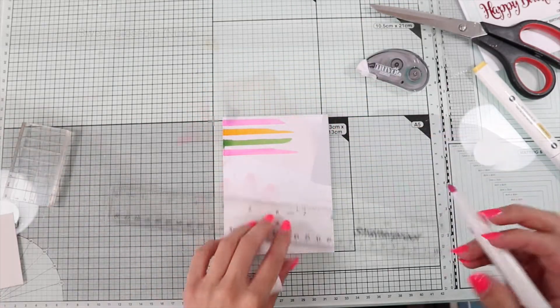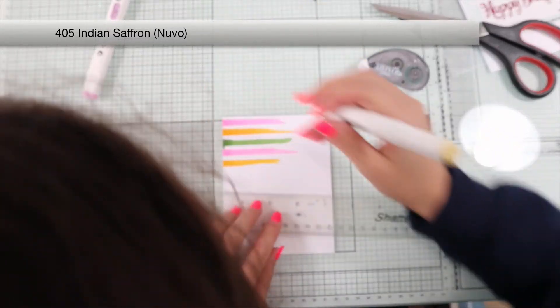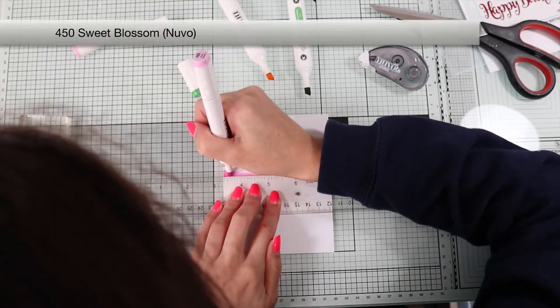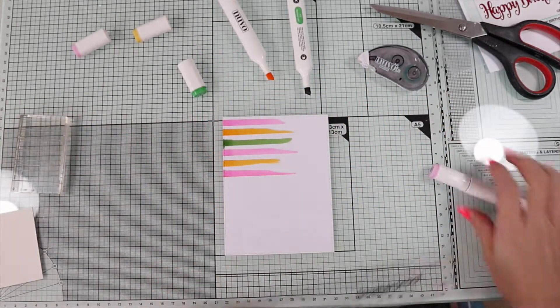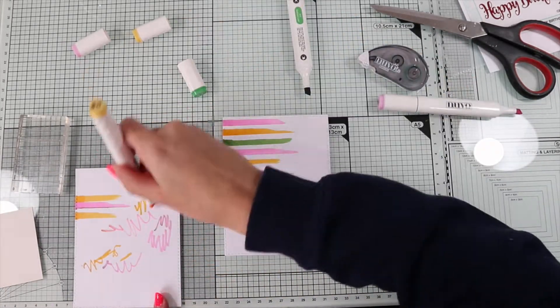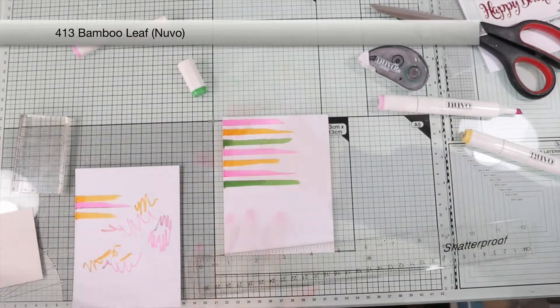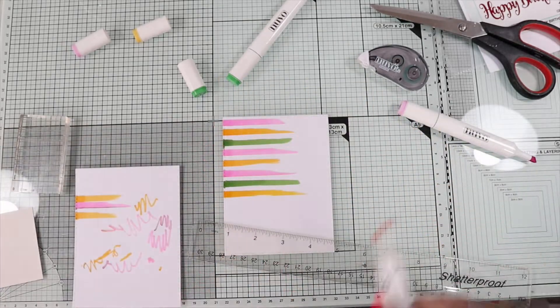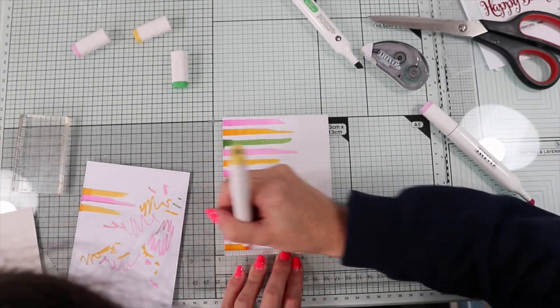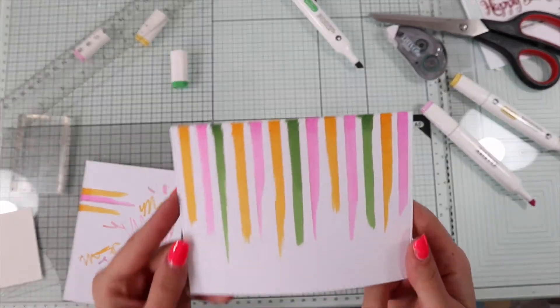I clean the ruler every time I change the color, otherwise I will contaminate the color I'm using with the one I used previously. And here we go! Simple, but I love it!